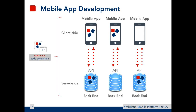The first situation shows a mobile app frontend (client side) done with WebRatio that communicates with a backend also done in WebRatio. But since our generated code is open, you can use a client-side mobile application generated with WebRatio and let it communicate with a backend made externally from WebRatio. And also the opposite: you can have a mobile app developed outside of WebRatio that communicates with a backend made in WebRatio.